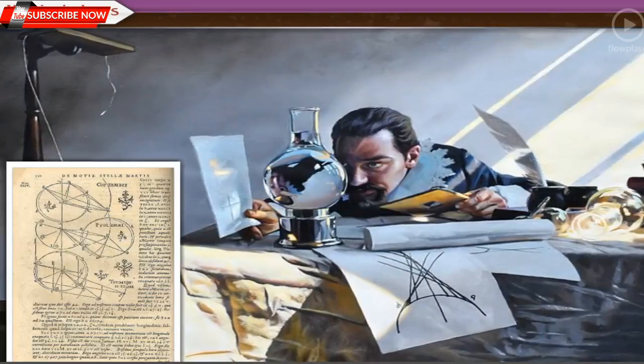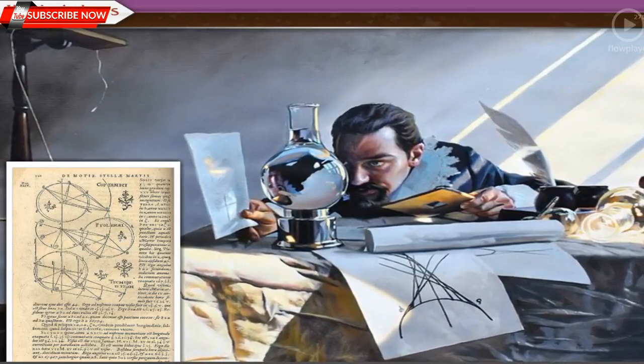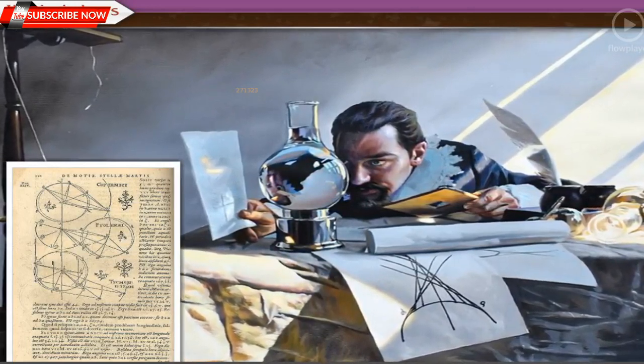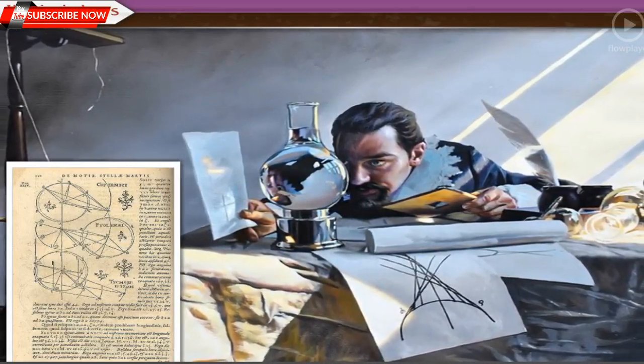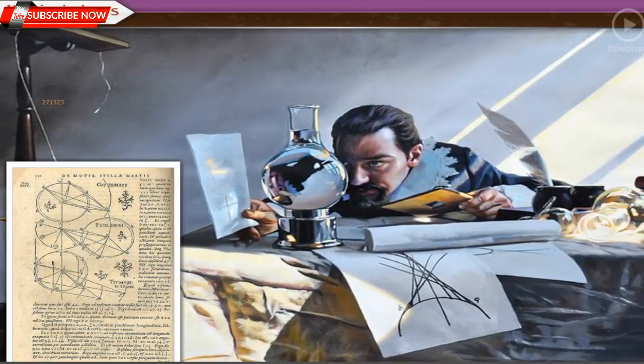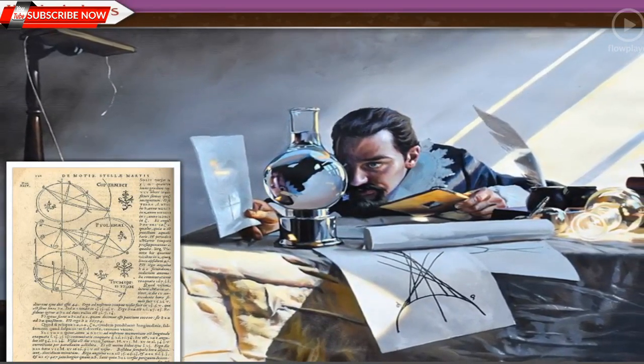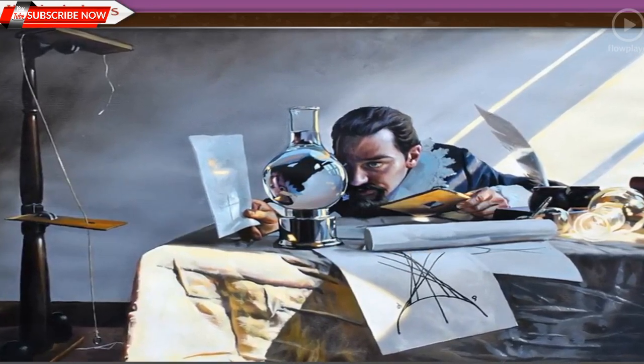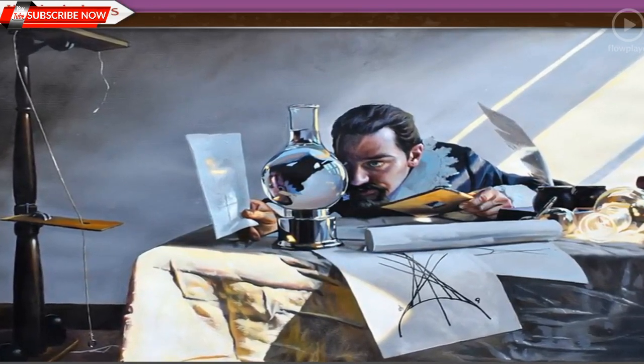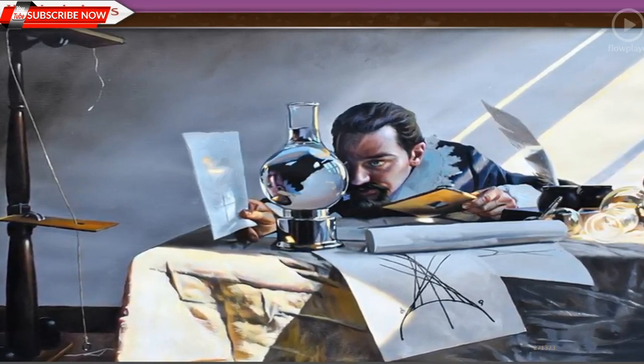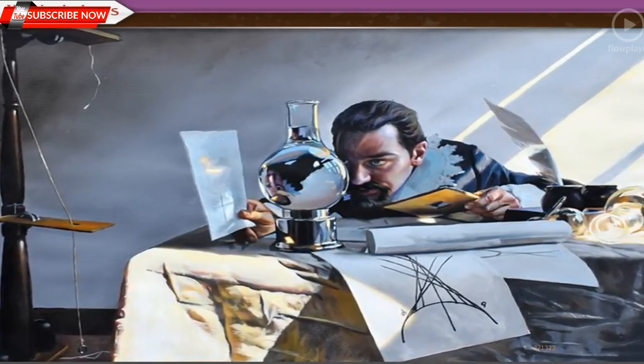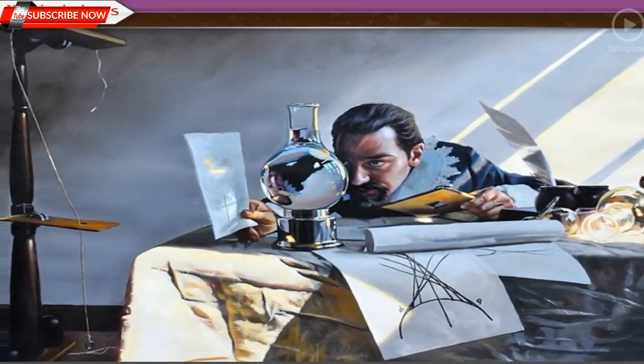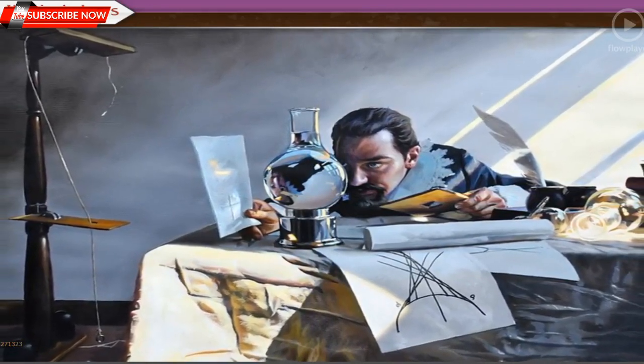Kepler obtained these laws simply from the study of the positions of planets obtained by regular observations. But Kepler could not explain why do planets obey these laws. In the next part of this chapter, we shall understand how these laws help Newton in the formulation of his theory of gravitation. Come, let us now move to the next part.